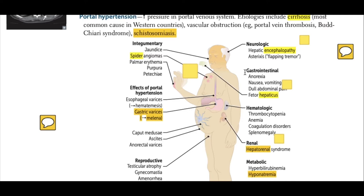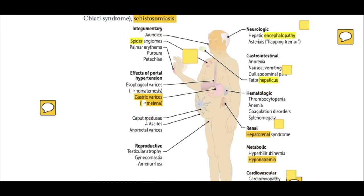The gastrointestinal system is also affected by liver cirrhosis. Conditions include anorexia, which is loss of appetite, nausea and vomiting, abdominal pain, and fetor hepaticus, which is a distinctive odor due to ammonia and dimethyl sulfide.